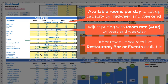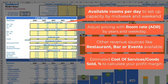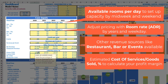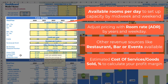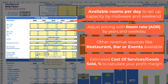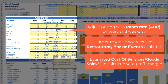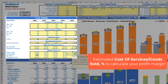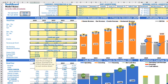Another very important assumption is the COGS percentage. Your four main revenue streams will have different margins, so you can set up the COGS percentage for each. For rooms it can be 20% across all years. For events it can vary — for example 25, 26, 27, 28, 29 percent.